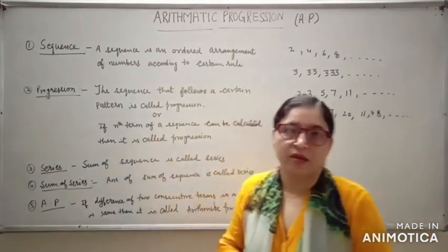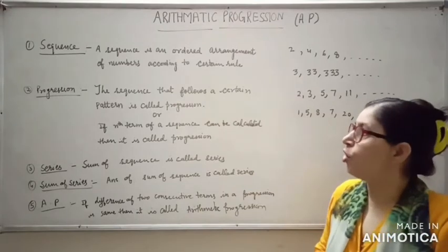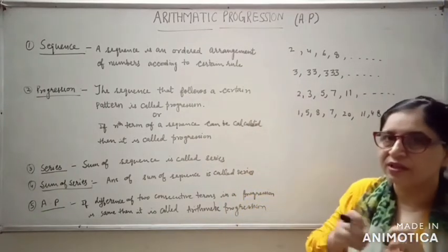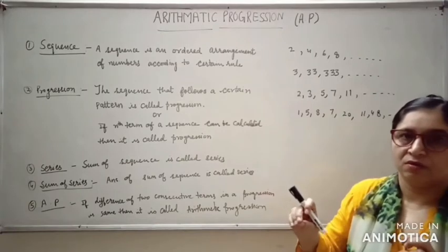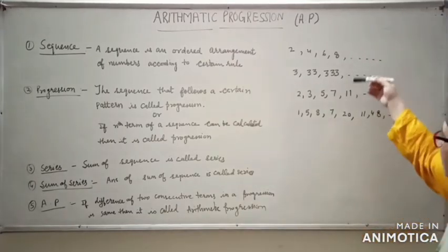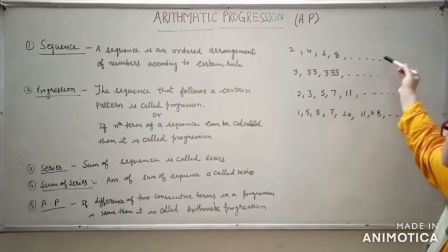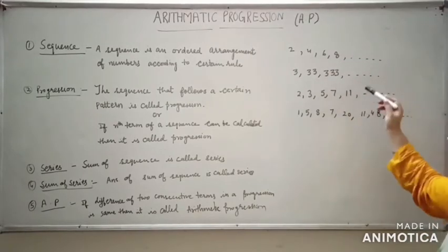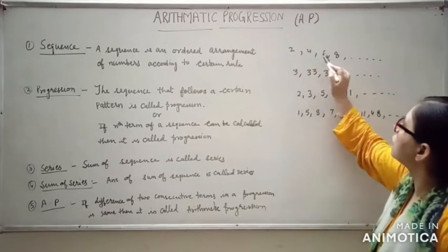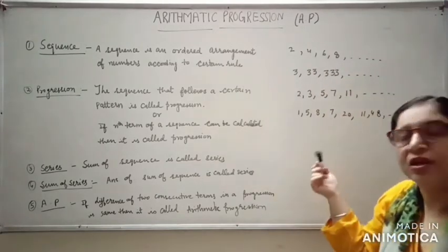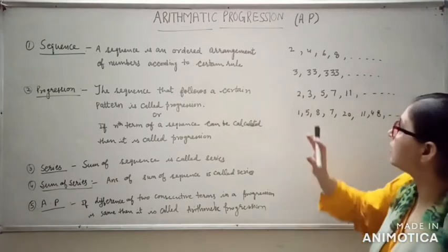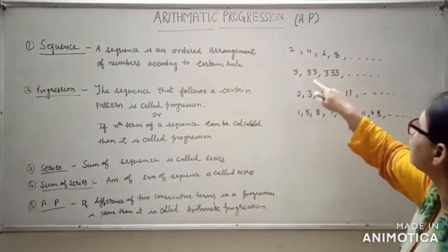What is a sequence? Sequence is an ordered arrangement of numbers according to a certain rule. If you have some numbers and you have written them according to a certain rule, then that is known as a sequence. You can see here, I have written a set of numbers and I will try to find out which set of numbers is a sequence.